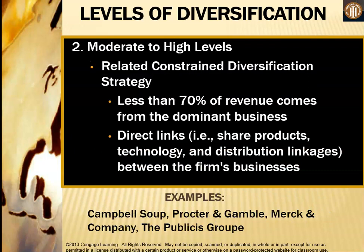Moving to moderate to high levels of diversification, we have the related constrained diversification strategy, where less than 70% of revenue comes from the dominant business. These different companies have direct links — they share products, technology, and distribution linkages between the firm's businesses. Examples include Campbell Soup, Procter & Gamble, American Company, and Publix Group. All of these companies have similar businesses within the group that share products, technology, and distribution linkages.